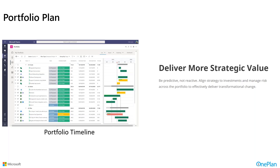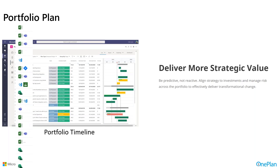Some key capabilities extend beyond just having schedule data from Project for the Web plans. For example, having an overall portfolio plan with portfolio views and portfolio timelines across all your plans gives rich capabilities at the portfolio level. OnePlan also supports bringing in Project Professional desktop plans alongside Project for the Web plans in the same portfolio, which may wean over time as more people gravitate toward Project for the Web.